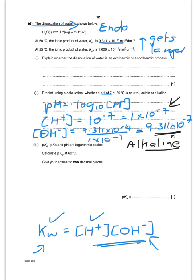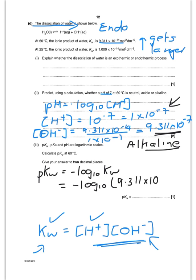pKw equals minus log₁₀ of Kw. At 60°C, Kw is 9.311×10⁻¹⁴, so pKw = 13.03.